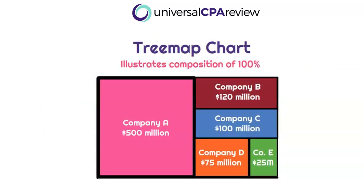The next chart is a tree map chart — one of my favorites — and it illustrates composition of 100%. If we're comparing five companies by market capitalization, we can easily see that company A is by far the largest at $500 million, while companies B and C are smaller at $120 million and $100 million each, and company E is the smallest. It allows you to visually understand the composition and relative size of different variables. It's very popular in finance and accounting.